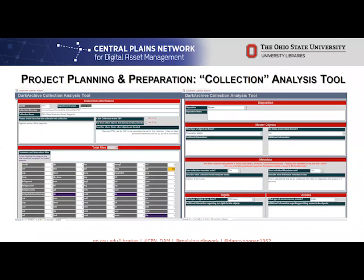I constructed an access database based upon the file paths in the Dark Archive that was then shared with the appropriate archivists and curators. It presented the file path and quantification of file types within, and then asked them to identify the collection the items belong to, whether other objects belonging to this collection exist and where they are located, whether the objects should be migrated, disposed, or in need of further processing or assessment. What type of objects were these — preservation masters, provisional masters, working copies, access copies, or reproduction copies? Are these preservation formats? Does collection-level and individual metadata exist, and if so, where do we find it? What are the intellectual property rights — public domain, owned by OSU, owned by the donor, mixed, or unknown? And what type of access are we allowed to provide — public, reading room only, private, curatorial staff only, or closed until some point in the future?